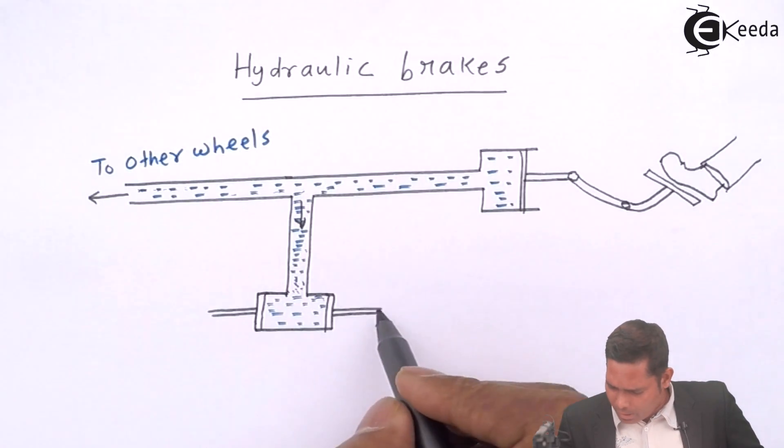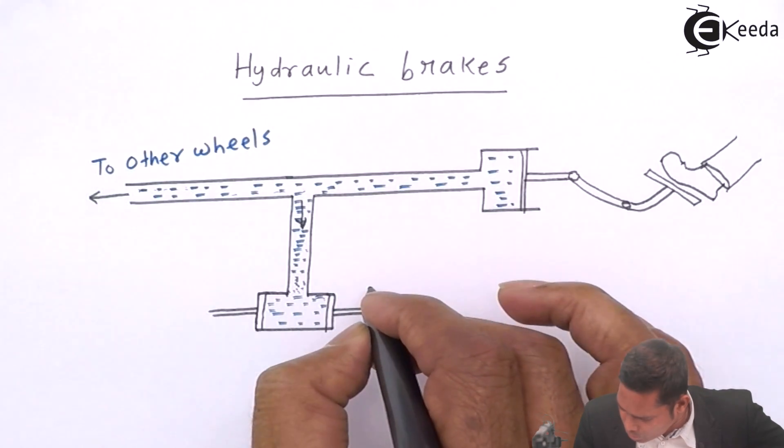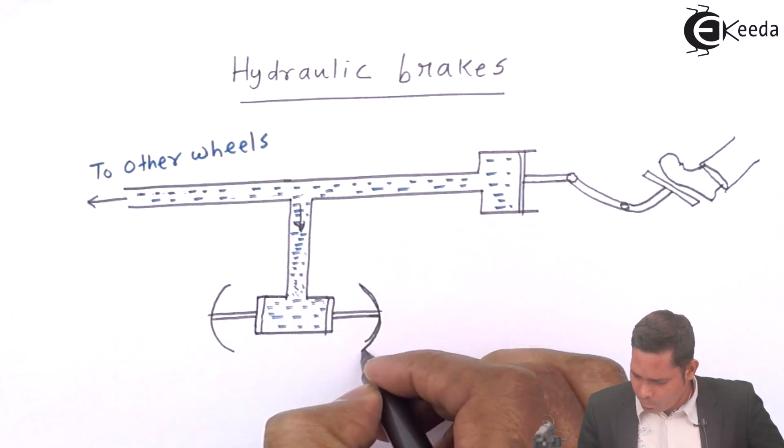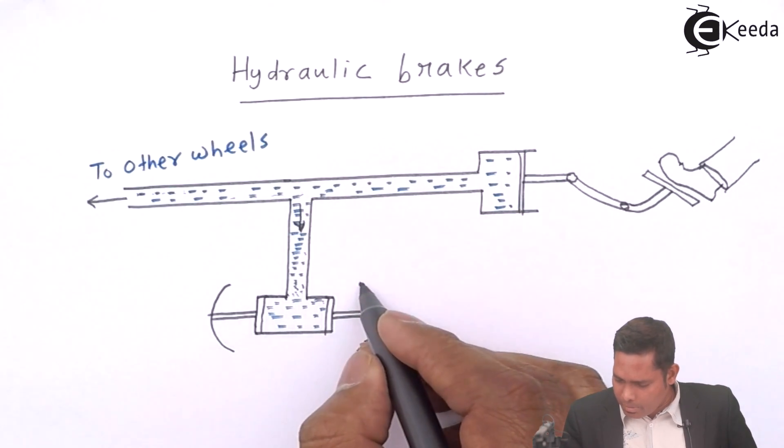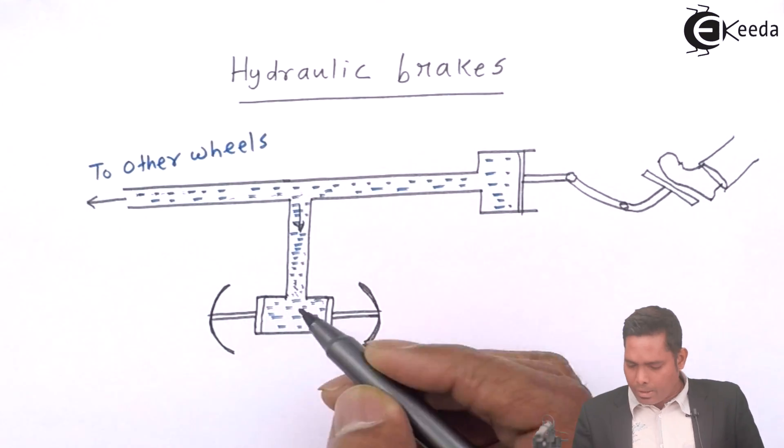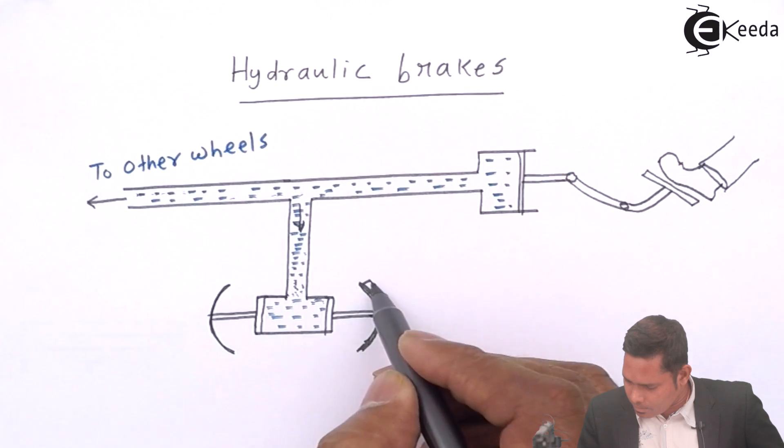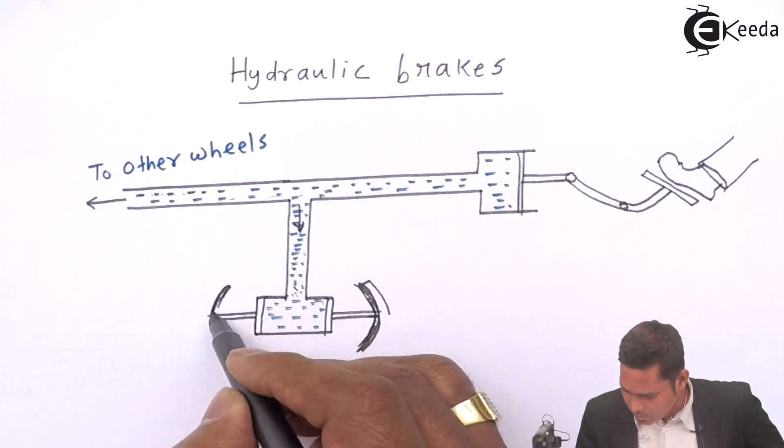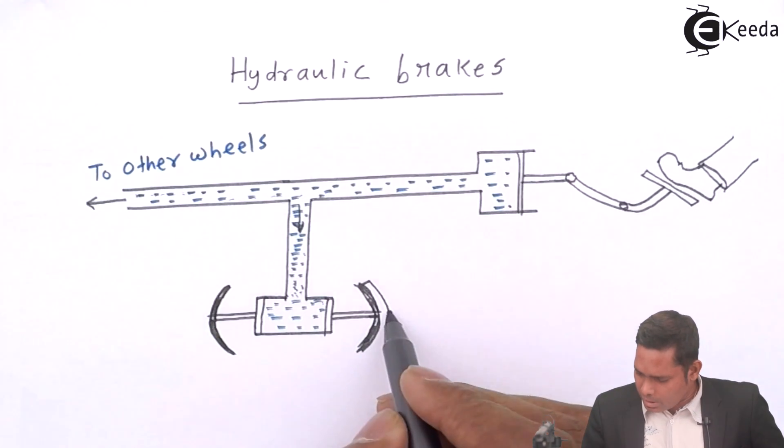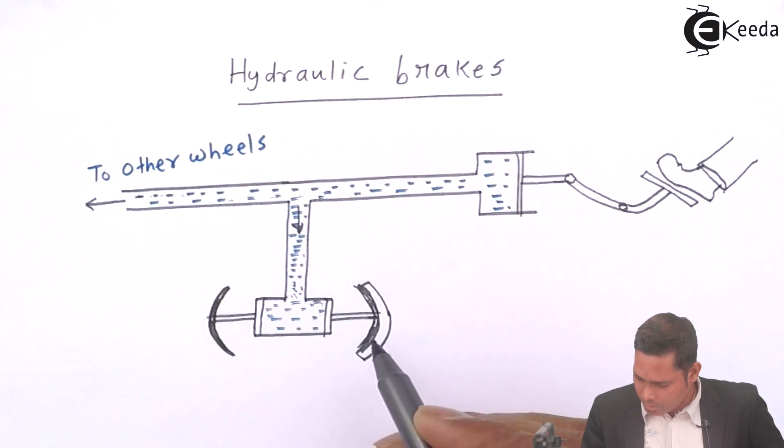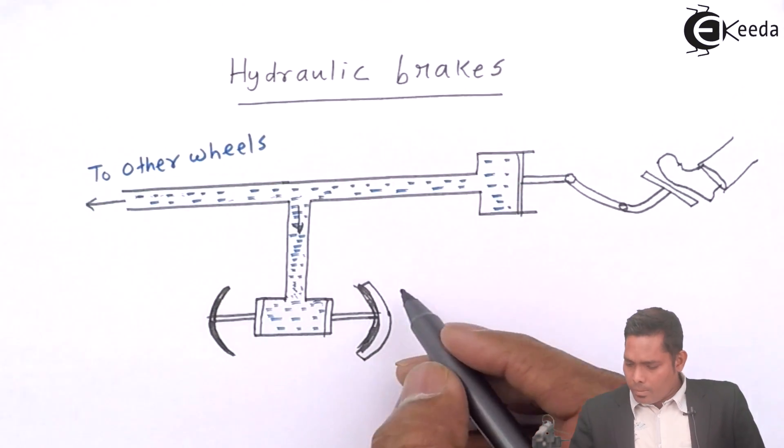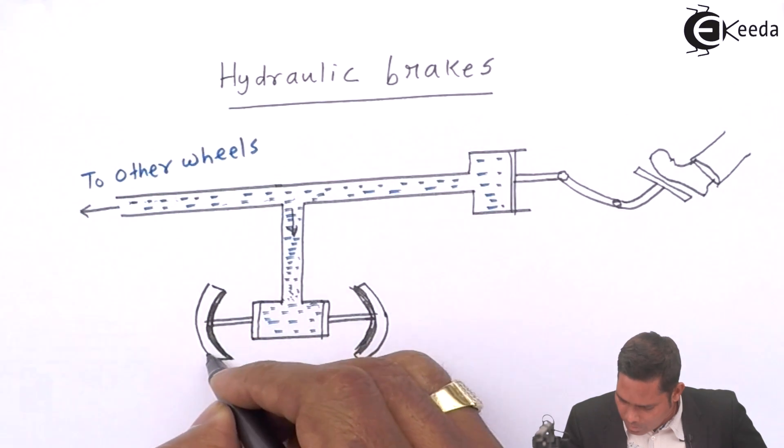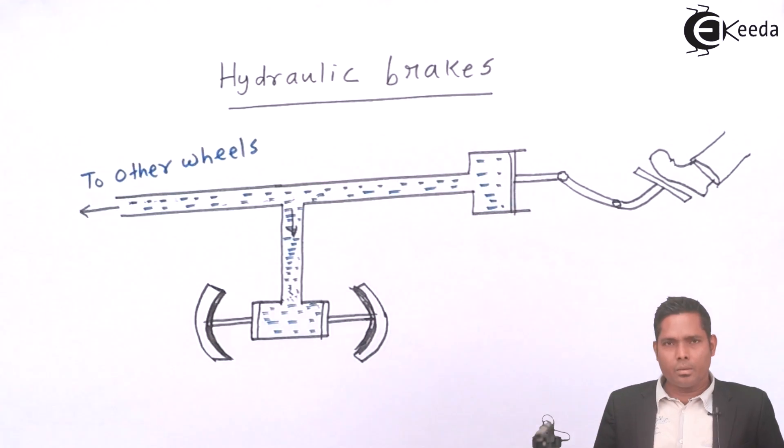Then it will move this side, this piston will move in this direction, this piston will move in that direction. So then what I'll do is this piston is connected actually to a metal body, this is a metal body.